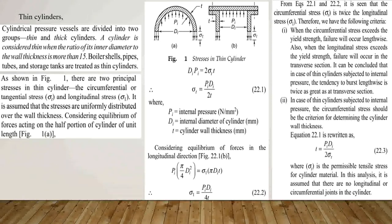This criteria is also used in Lame's equation. To calculate wall thickness, from equation 22.1 we get: t equals pi times di divided by 2 sigma-t, where sigma-t is the permissible tensile stress of the cylinder material. In this analysis, there are no longitudinal or circumferential joints considered — we assume there are no such joints in the cylinders.